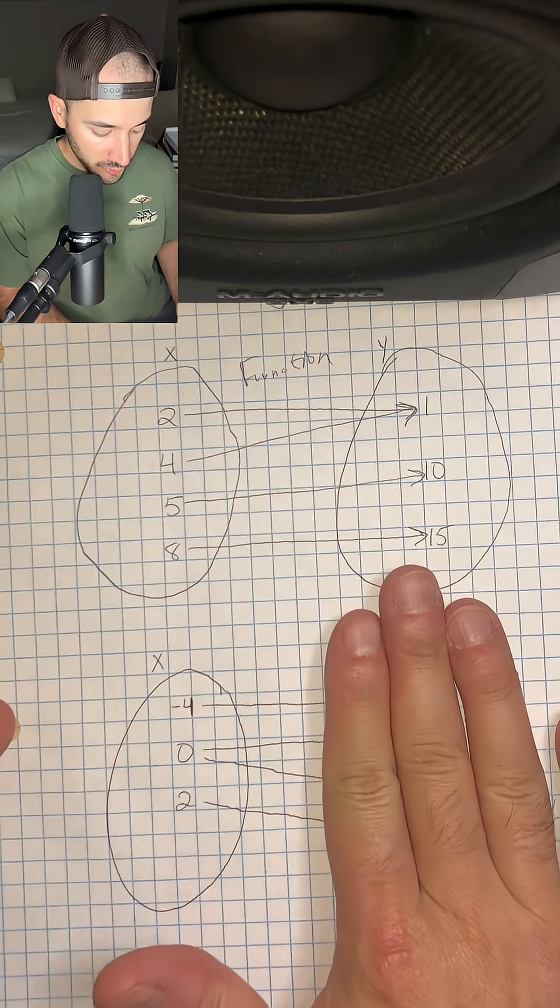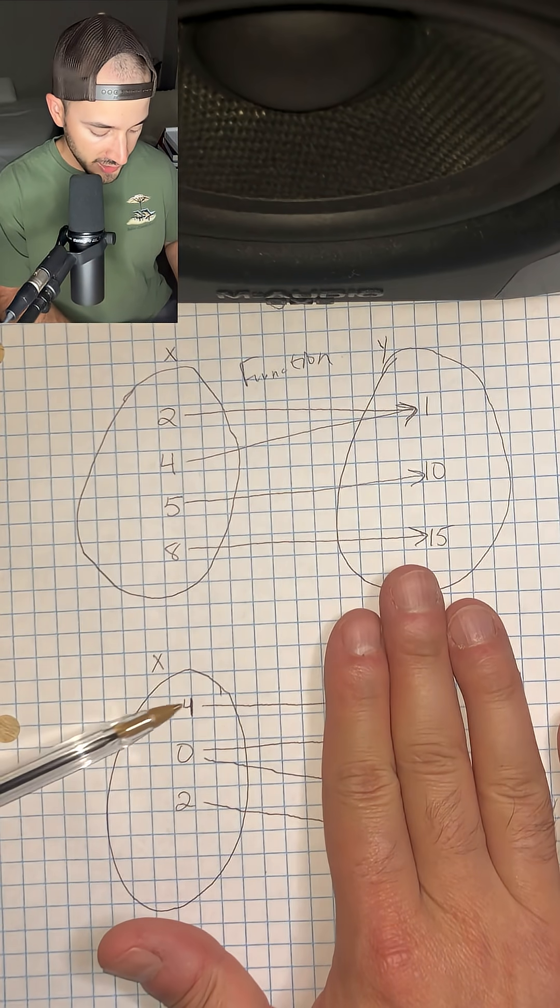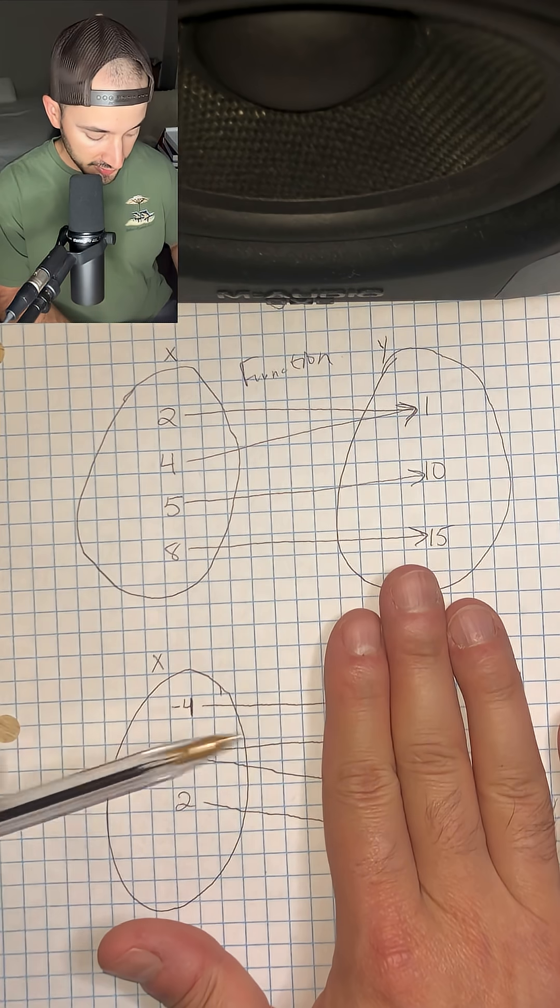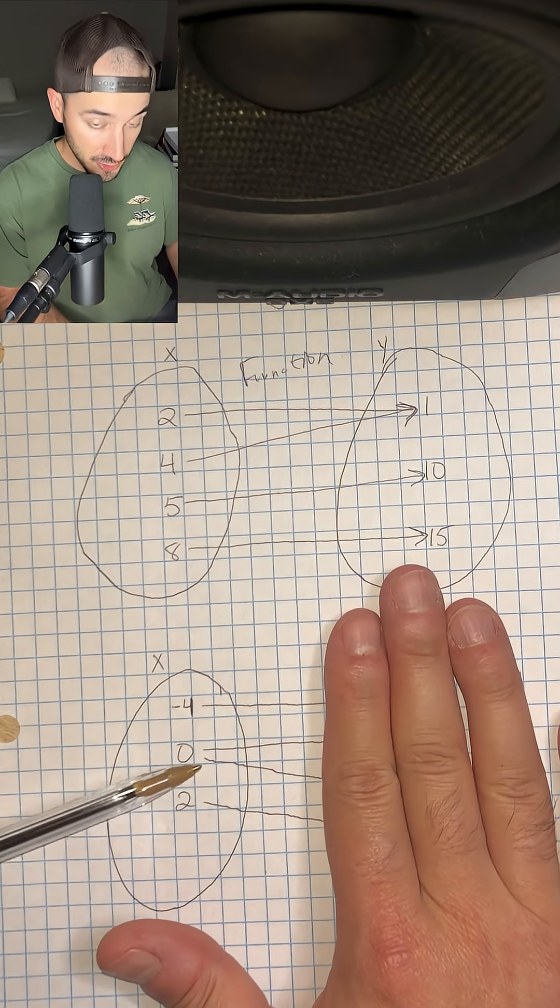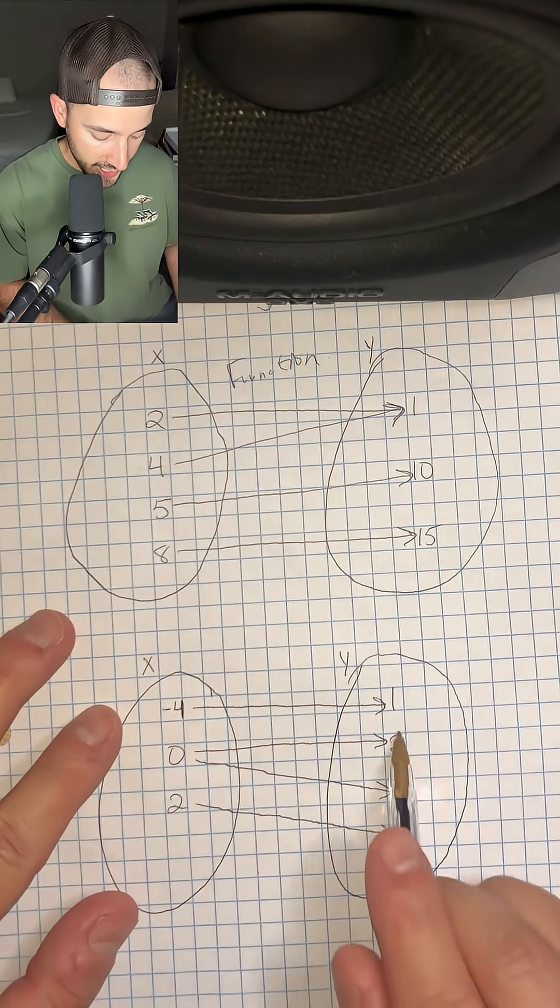Remember we only have to look at the x values. So negative four only has one arrow or one line leaving it, but zero has two lines leaving it. That means that this input has more than one output.